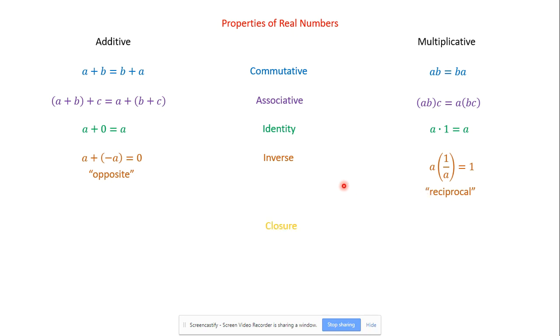Our next property is closure. Now this is a weird property because we don't use it as we're solving things. This is more of an idea property. But what closure says for addition and multiplication: if we add 2 things in a set, if it is closed, a closed set, then the answer will also be in that set. The real numbers is closed under addition and multiplication. So A plus B, any two real numbers, will still be a real number. And multiplication, A times B, multiplying any two real numbers, will still be a real number.